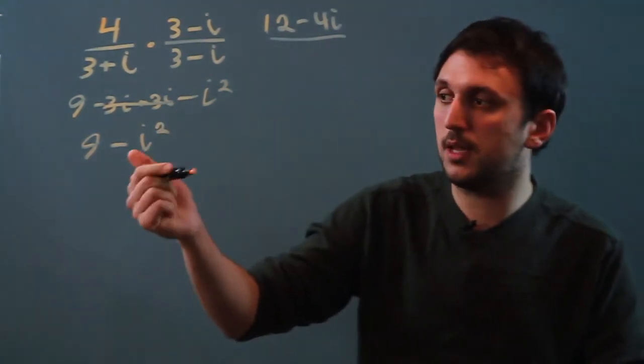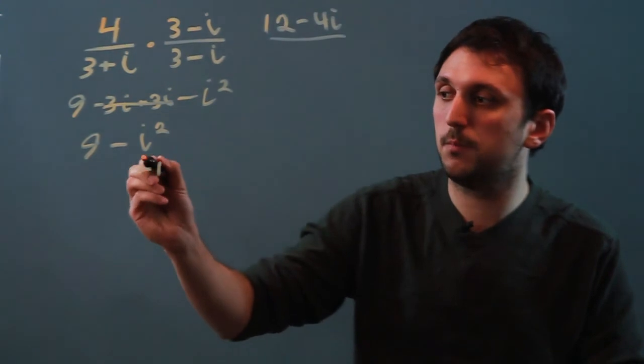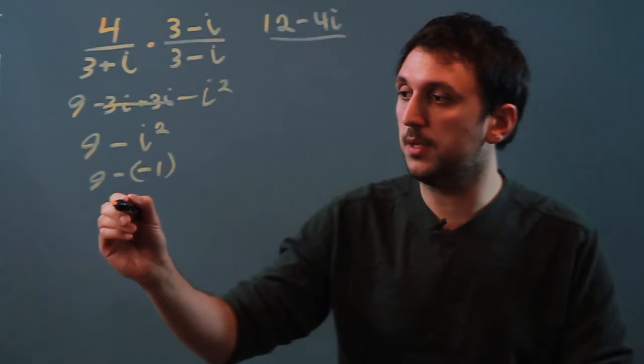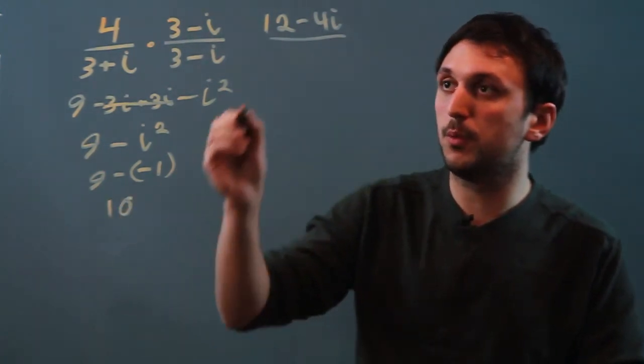And i squared, you'll remember, is actually just negative 1. So 9 minus negative 1 is going to be 10. So we bring it up here.